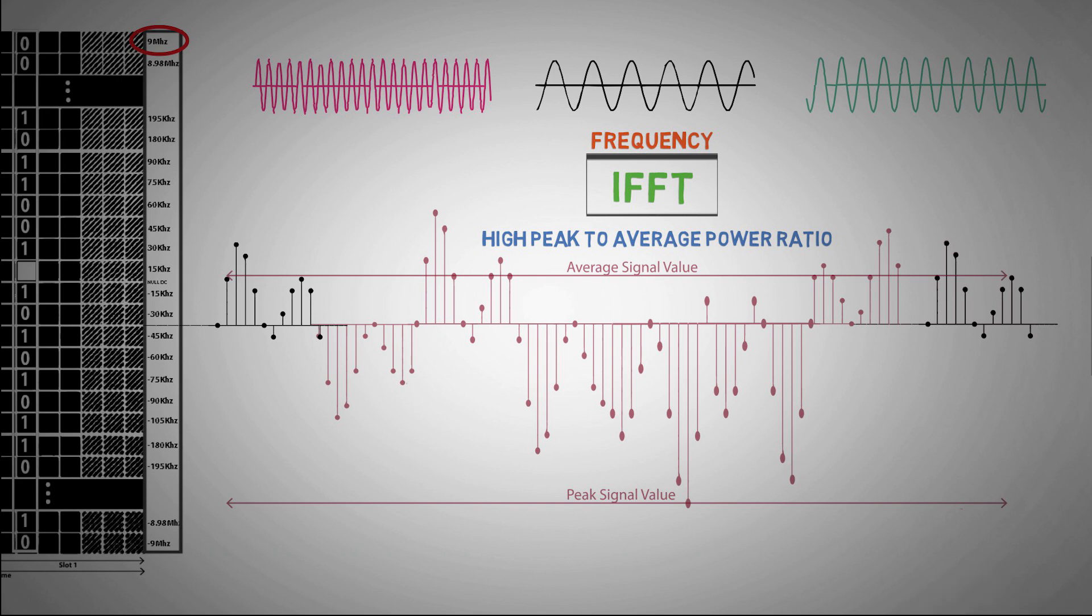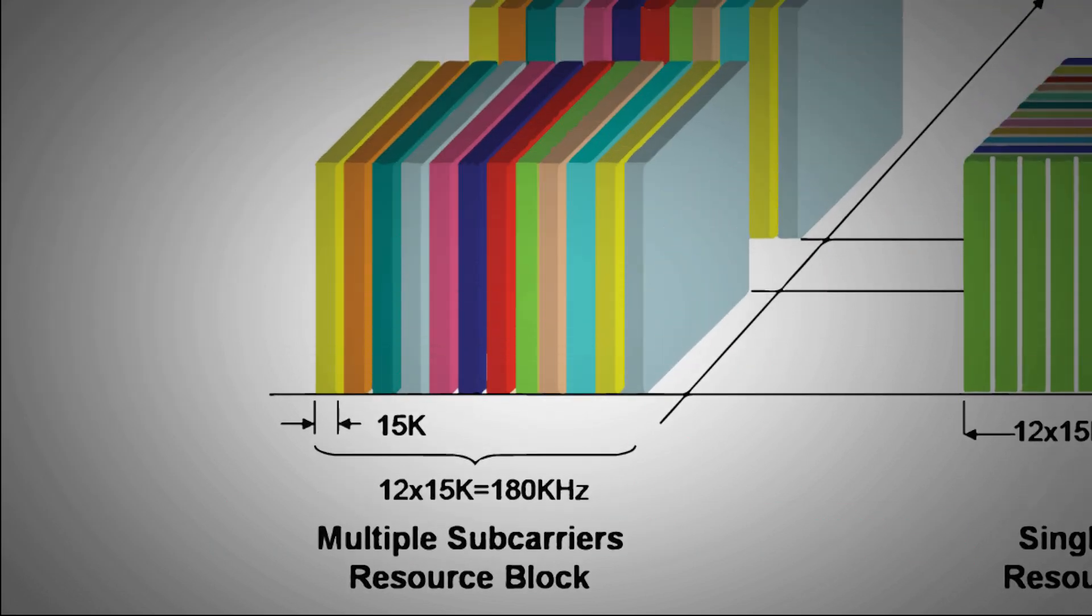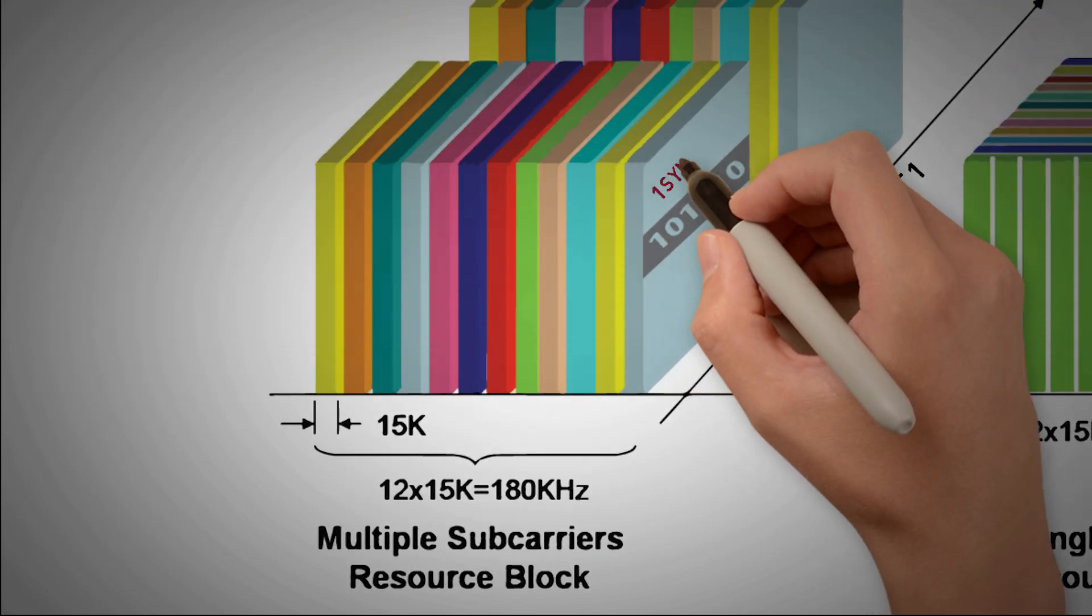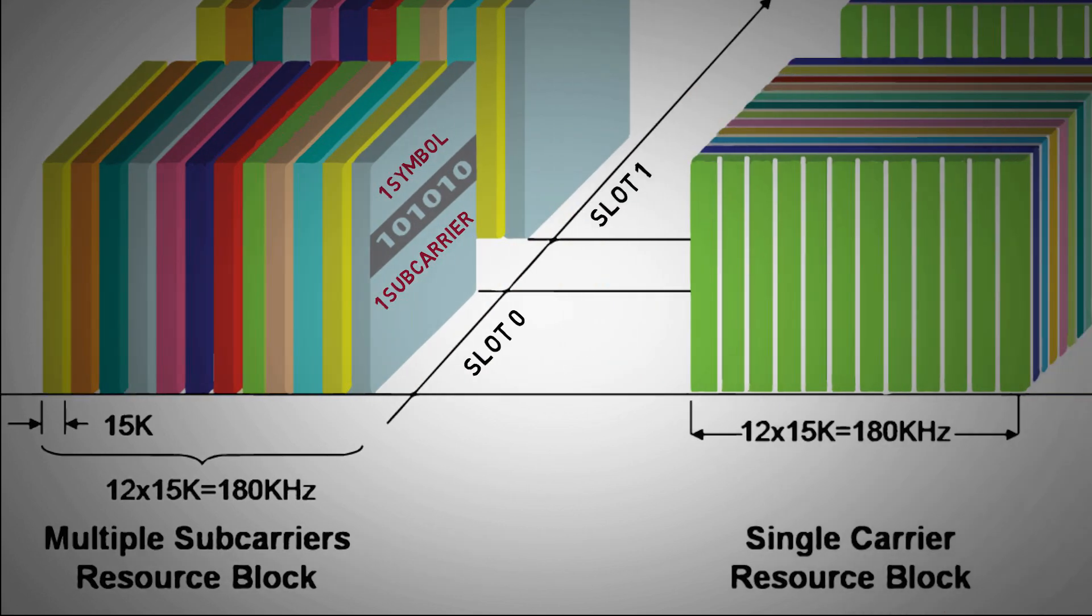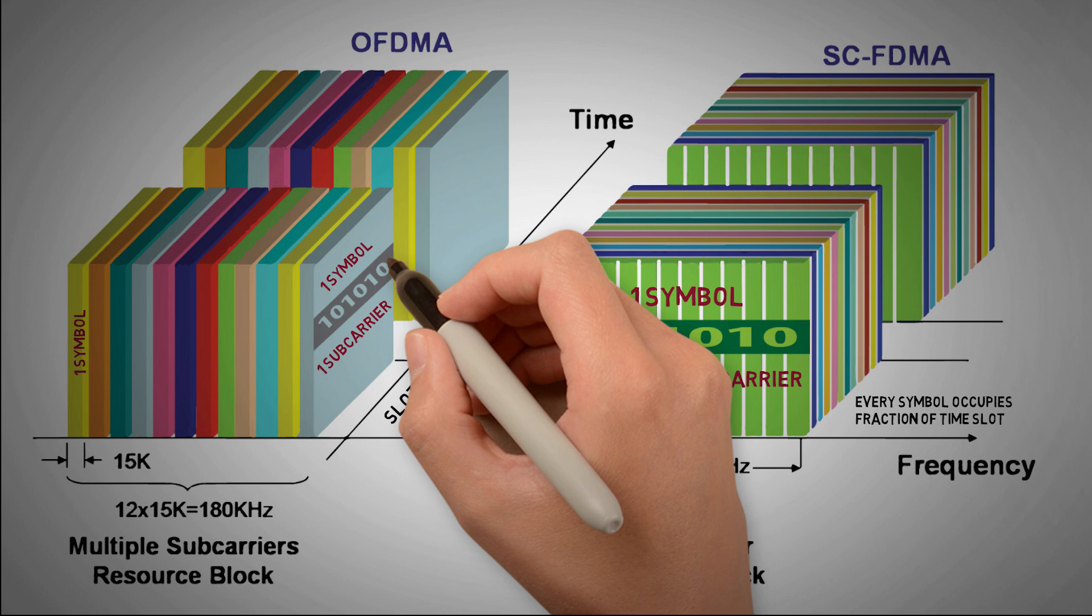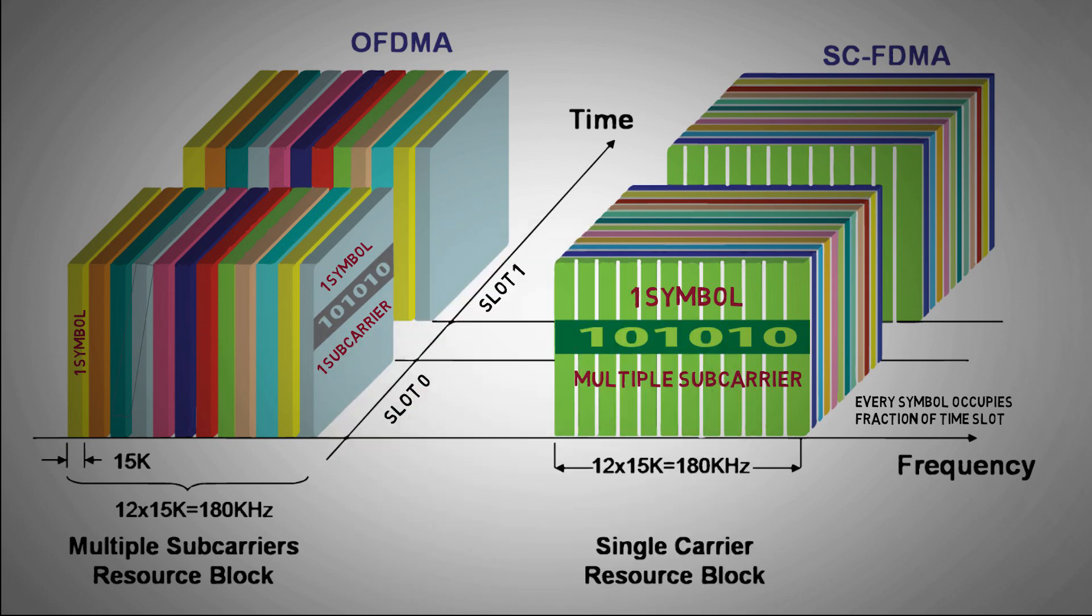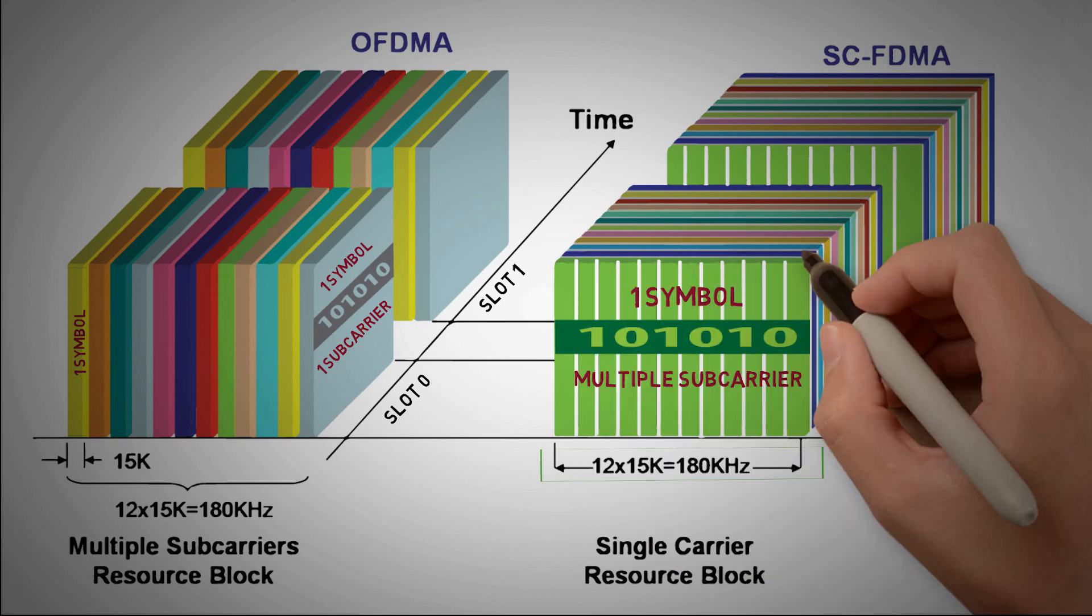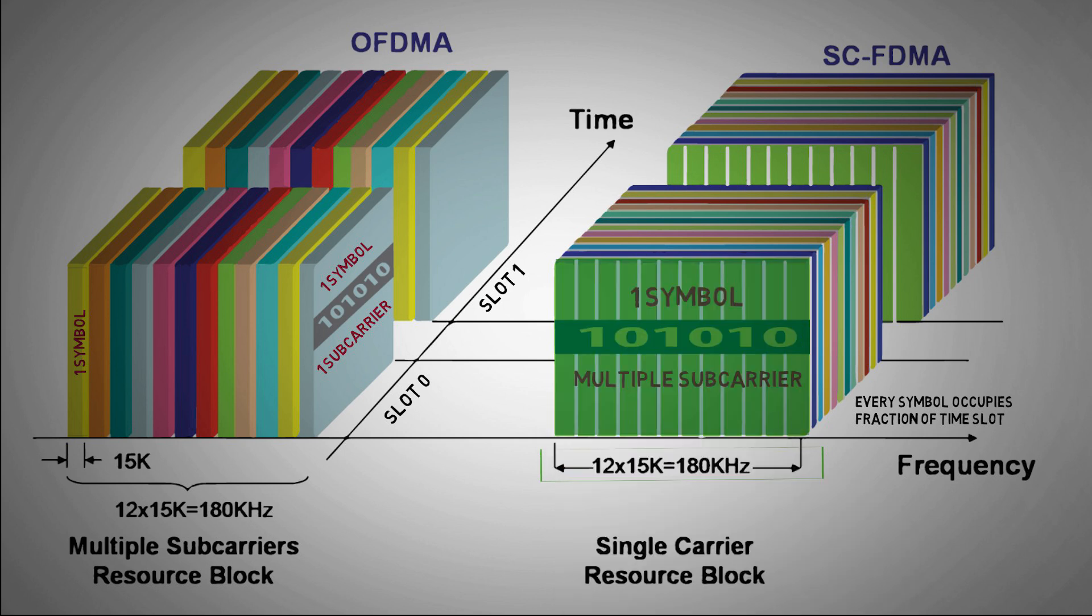In order to overcome this, LTE uses SC-FDMA in uplink direction. In OFDMA, we have one-to-one mapping between symbol and subcarrier, but SC-FDMA allows a symbol to be transmitted in parts over multiple subcarriers. For example, in OFDMA one symbol occupies one subcarrier of 15 kHz, but in SC-FDMA, same symbol is distributed among multiple subcarriers of 15 kHz. In short, SC-FDMA behaves like a single carrier system with short symbol duration compared to OFDMA.